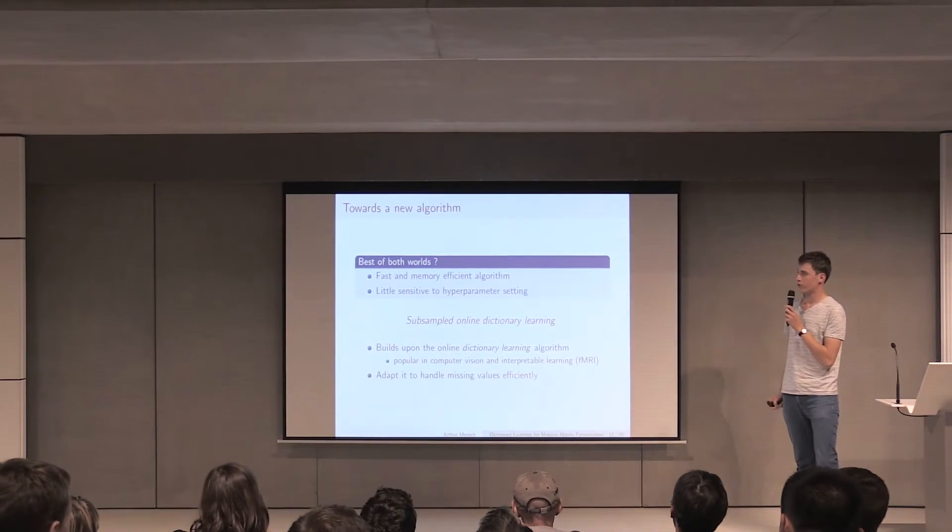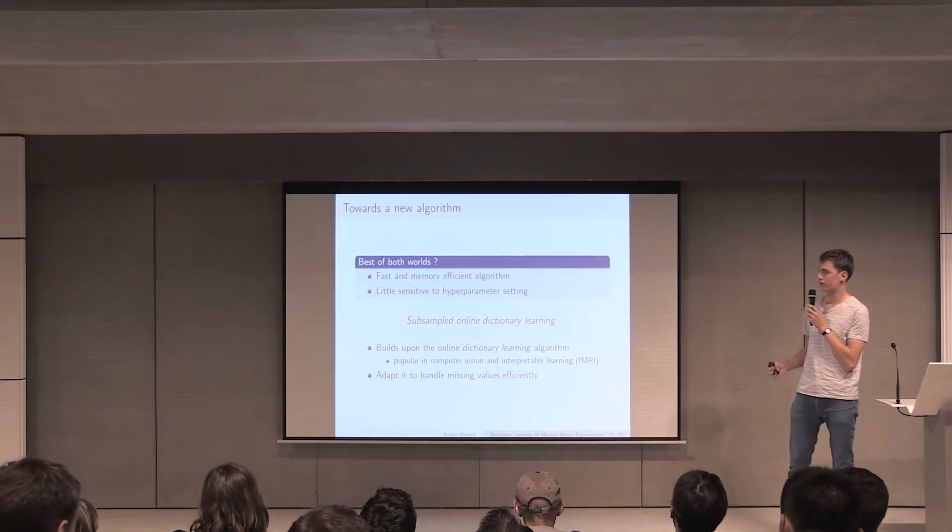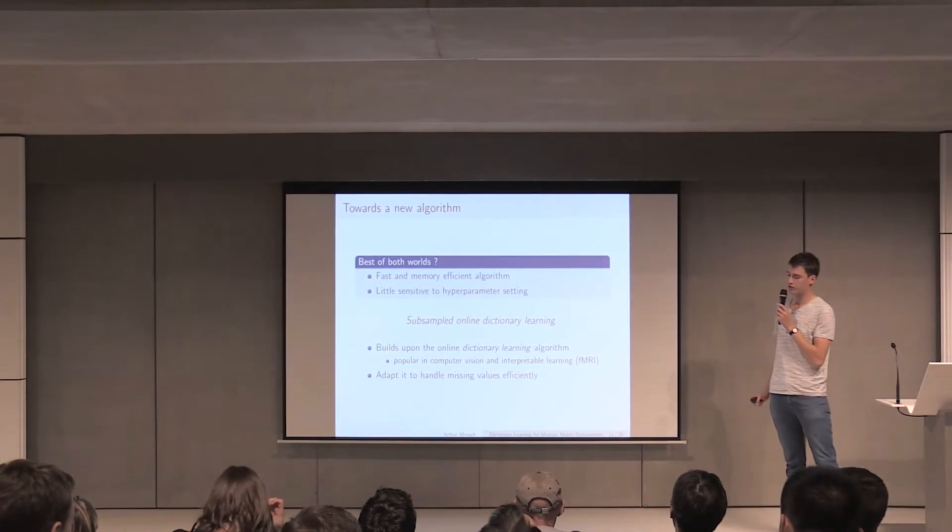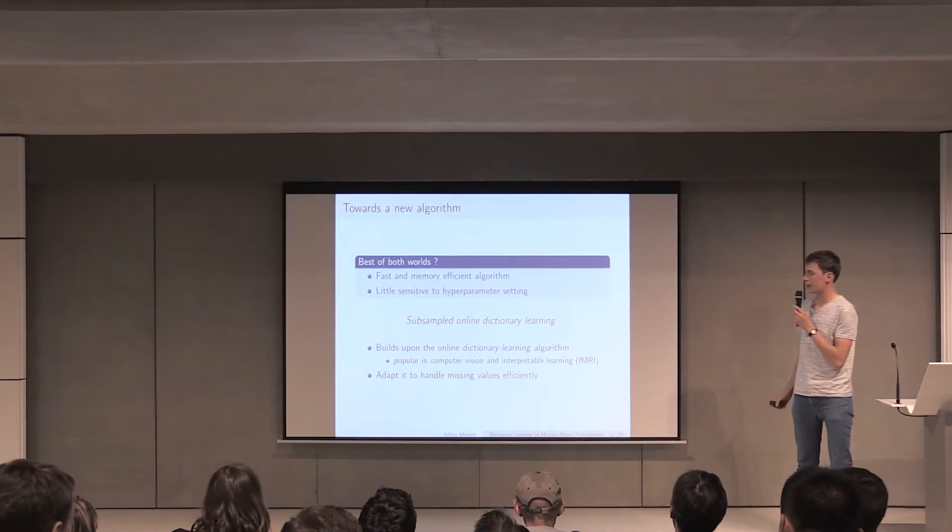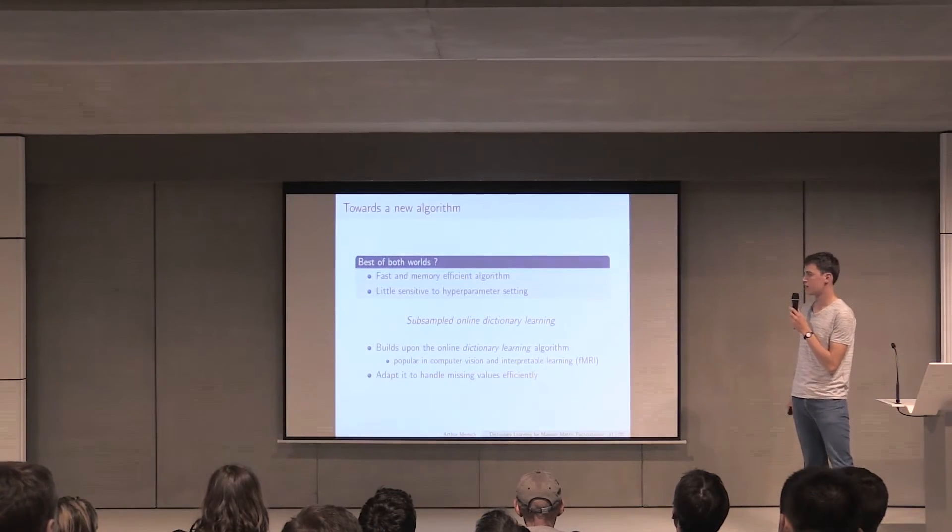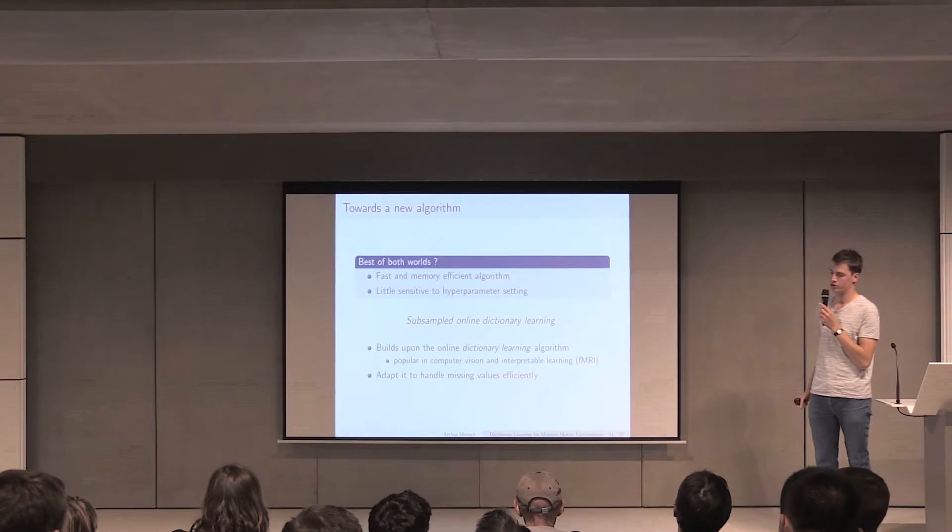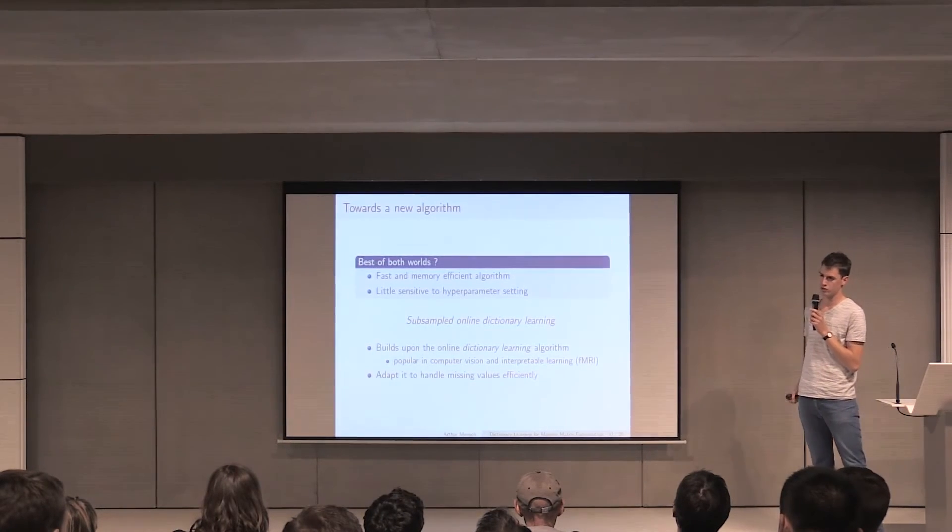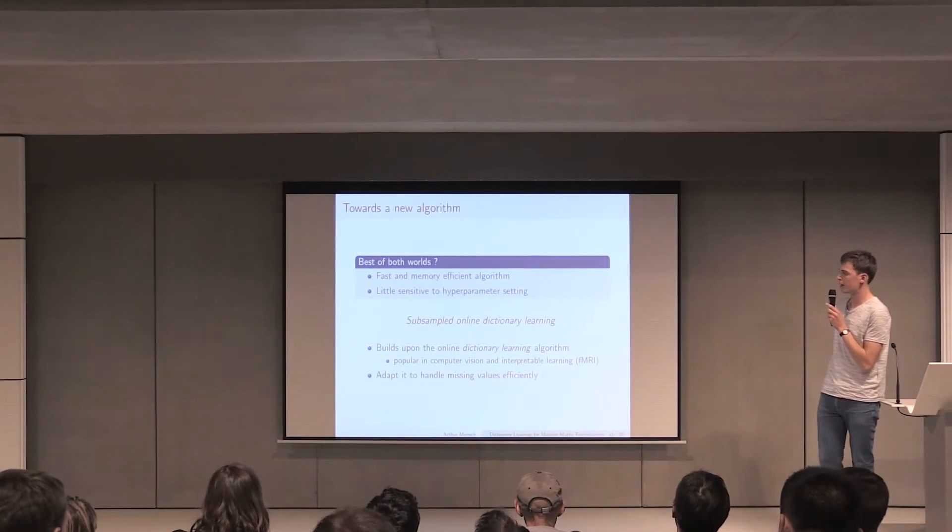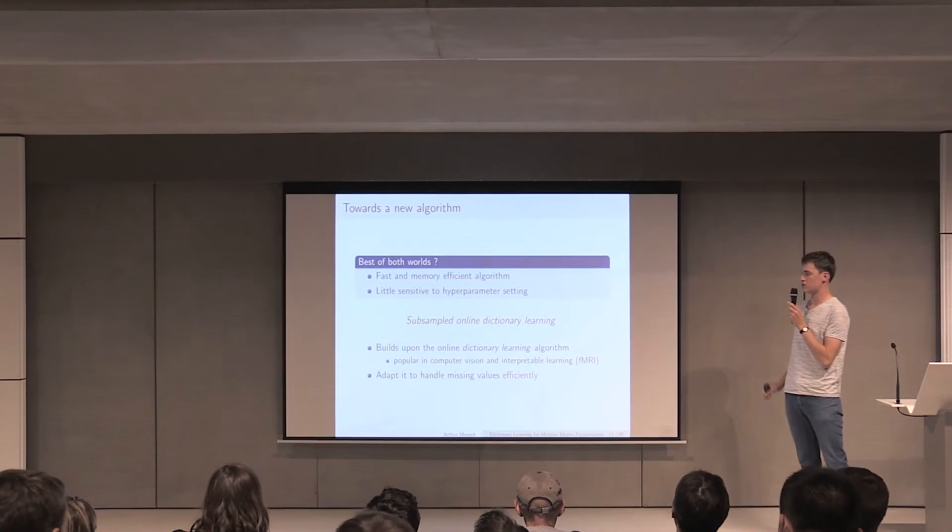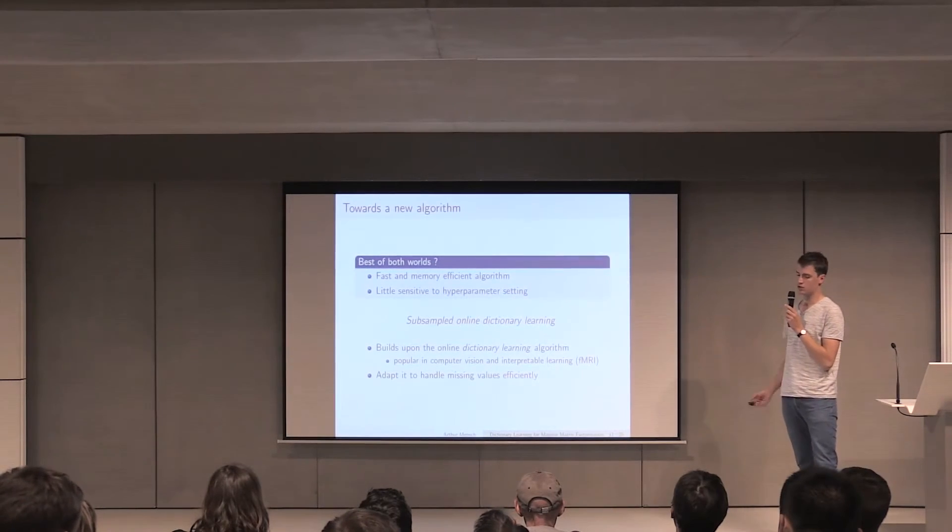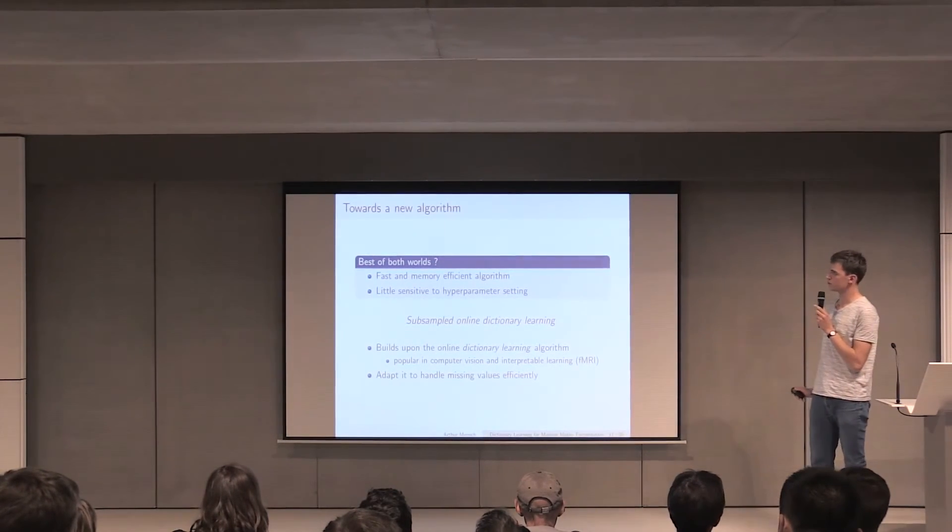What we want here is to have the best of both worlds, meaning that we want a fast and memory efficient algorithm like stochastic gradient descent, but we would also like to have an algorithm that is little sensitive to hyper-parameter setting. That's why we introduced an algorithm called subsampled online dictionary learning, that builds upon the online dictionary learning algorithm that was introduced in computer vision, and that is known to be both efficient and not dependent on hyper-parameters. What we do is to adapt it to handle missing values, because we don't know all the ratings, and we do it in an efficient manner so that the algorithm is fast enough.